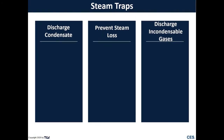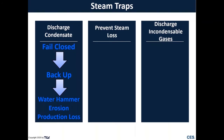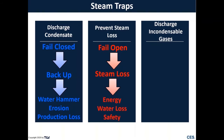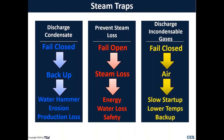What happens when a steam trap fails? If the steam trap fails closed, we back up condensate, leading to water hammer, erosion, and production losses. If the trap fails open, we have steam loss — wasted energy, lost water, and a potential safety situation if discharging to atmosphere. We may also have problems with the trap failing closed due to non-condensible gases like air, causing slower startup, lower temperatures, condensate backup, water hammer, and production losses.